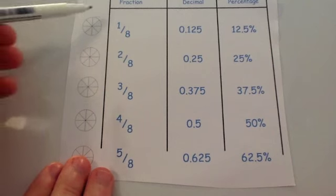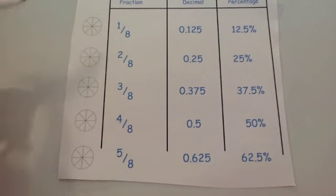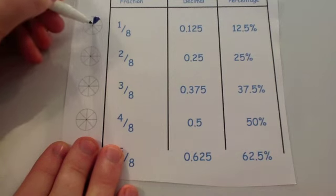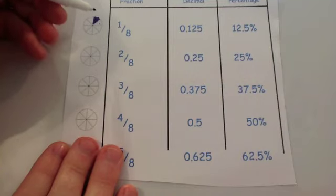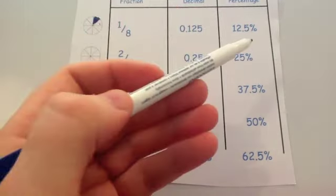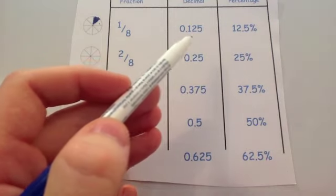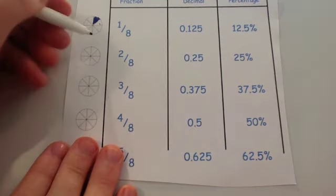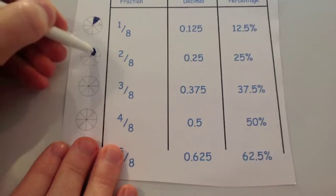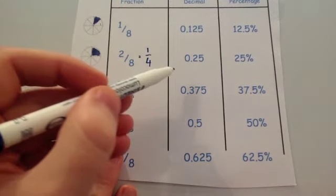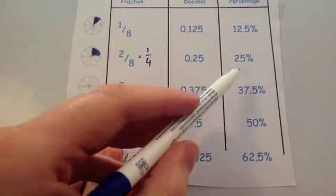Now let's look at eighths. If the circle is cut into eight sections and you shade in one eighth, that's one section. Notice that a quarter covers two of those sections, so one eighth is half of a quarter. Half of 25% is 12.5%, so one eighth equals 12.5% or 0.125. Two eighths is two sections, which makes a quarter — so two eighths equals one quarter: 0.25 or 25%.